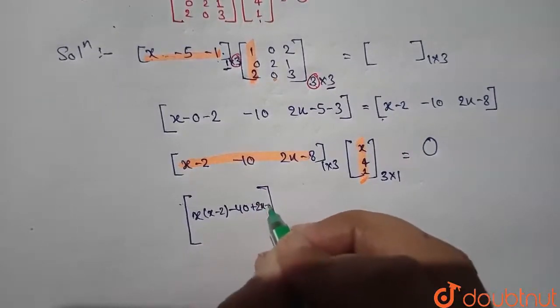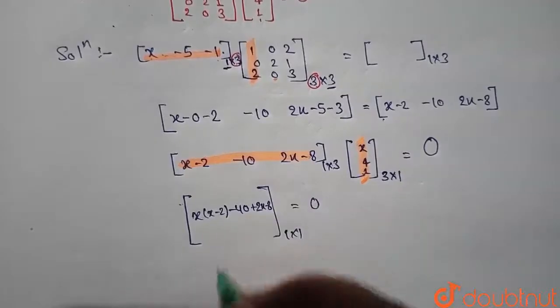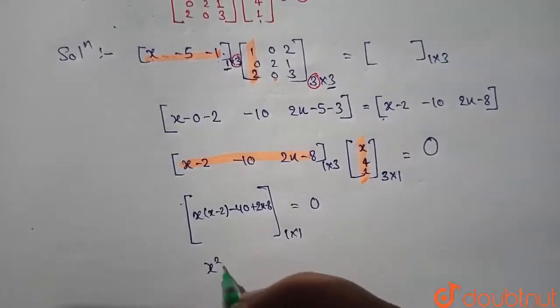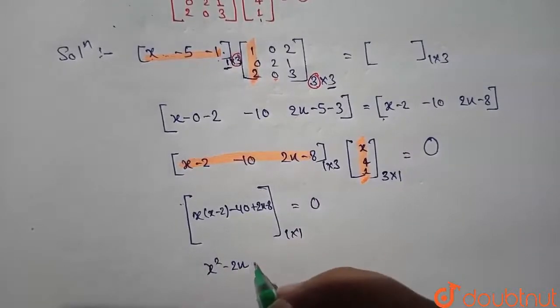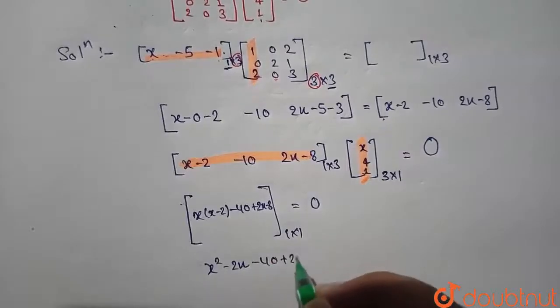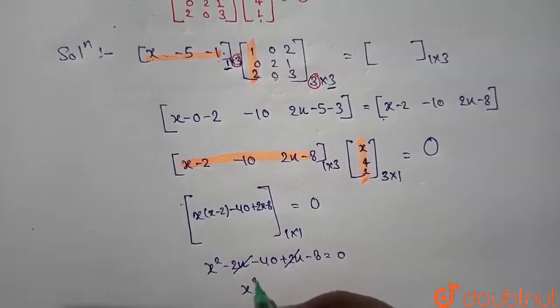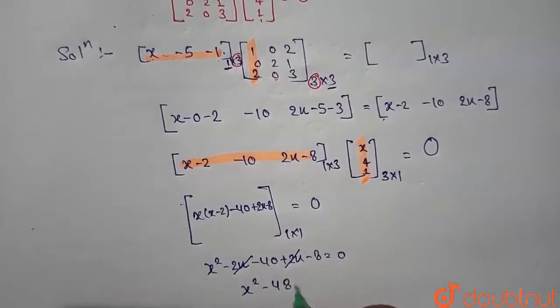So it will become x² - 2x - 40 + 2x - 8 = 0. The 2x and 2x cancel out, then it will become x² - 48 = 0.